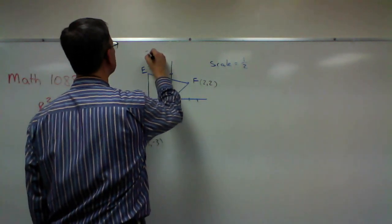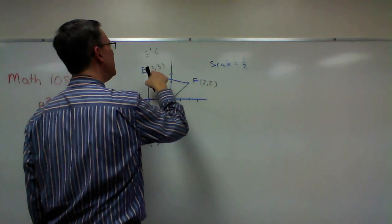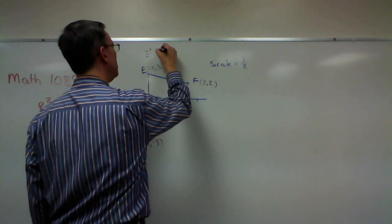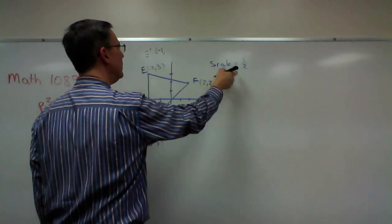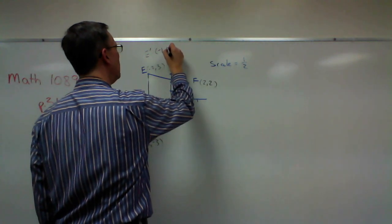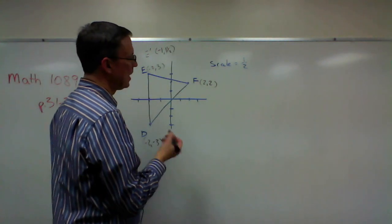So I'll call this E prime, and negative two times one half would be negative one. Three times one half is one and a half. Three halves.